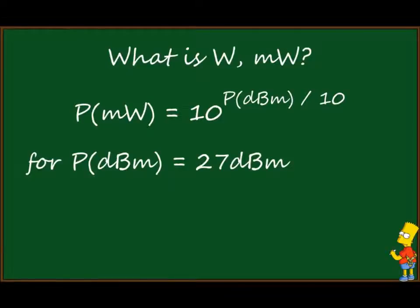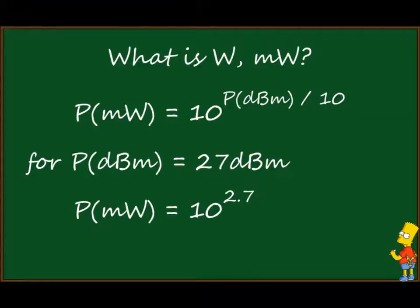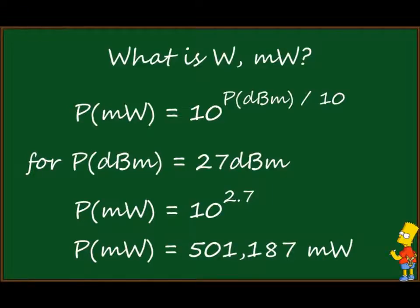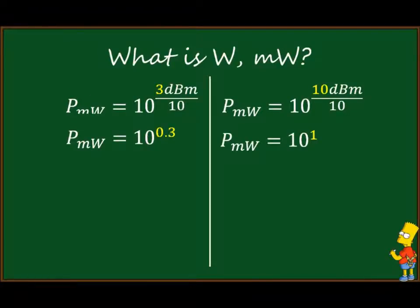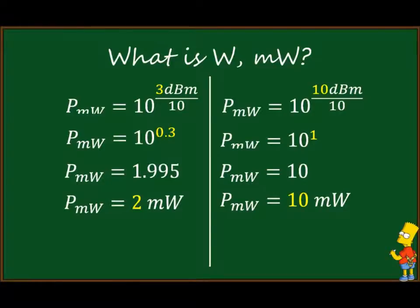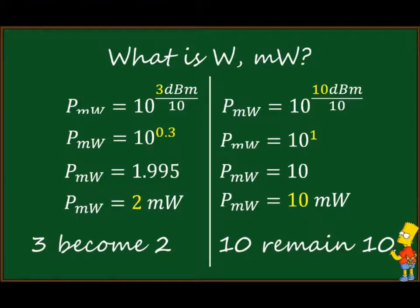For 27 dBm, the exponent gives us 10^2.7, which results in 501 milliwatts. It's impossible to calculate that exponentiation without a calculator, so we will use a little trick: we calculate and remember only two values — 3 dBm and 10 dBm. Everything else will be derived from those. The result is that 3 dBm = 2 milliwatts and 10 dBm = 10 milliwatts.